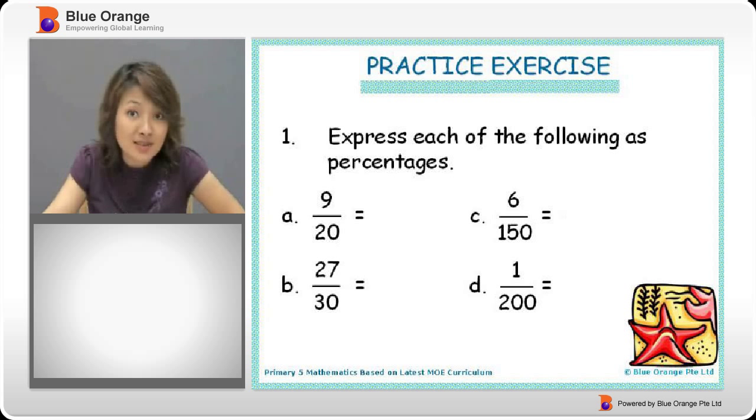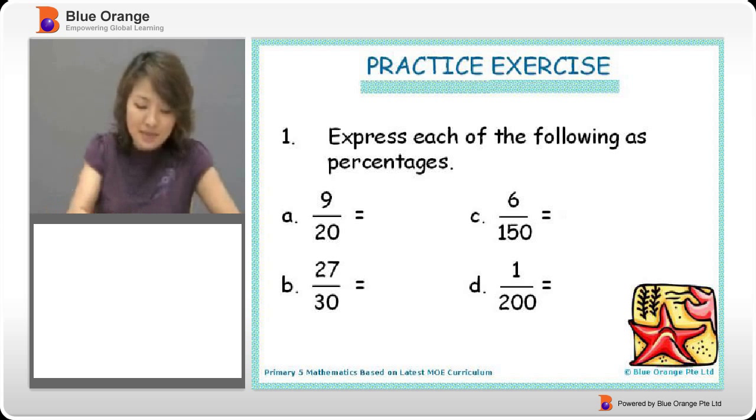Do you recall how to do it? It's always base 100, right? So let's look at A, 9 over 20. How do we make it to a base 100? We have to multiply by 5. So here, we times 5, we get 45.